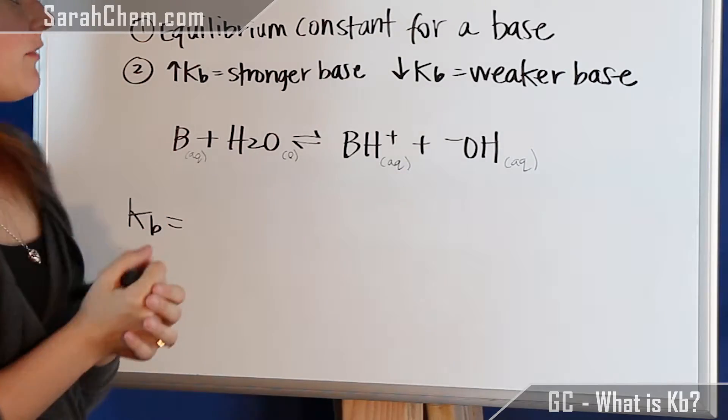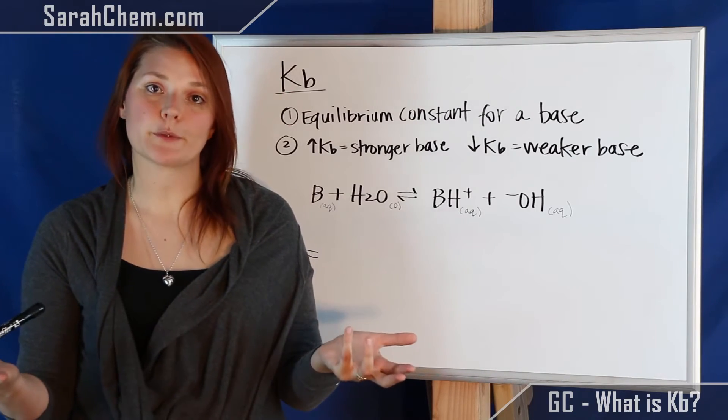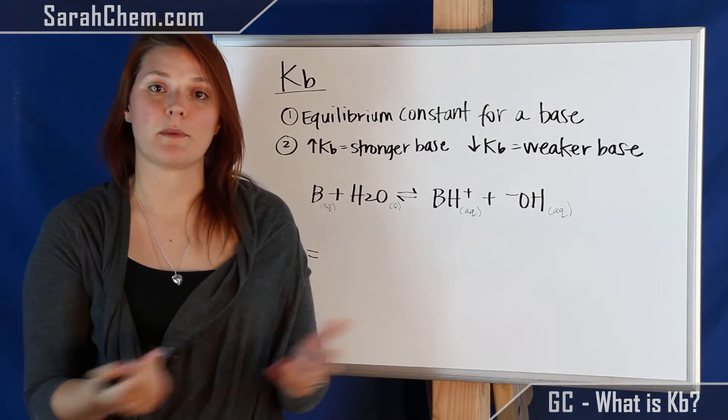The second thing is that the higher the Kb value is, the stronger the base will be, and the lower the Kb value is, the weaker the base would be.